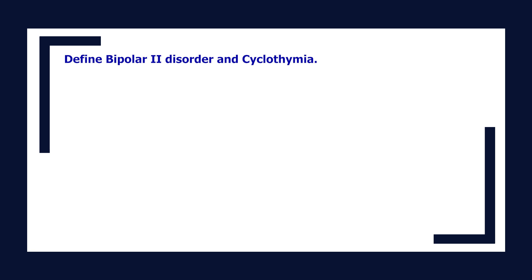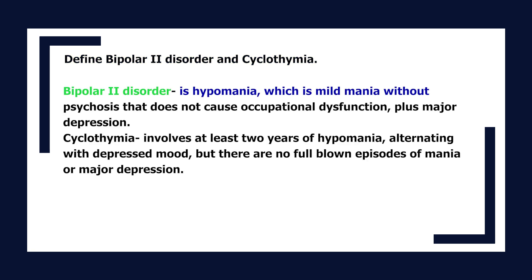Define bipolar 2 disorder and cyclothymia. Bipolar 2 disorder is hypomania — mild mania without psychosis that does not cause occupational dysfunction — plus major depression. Cyclothymia involves at least 2 years of hypomania alternating with depressed mood, but there are no full-blown episodes of mania or major depression.